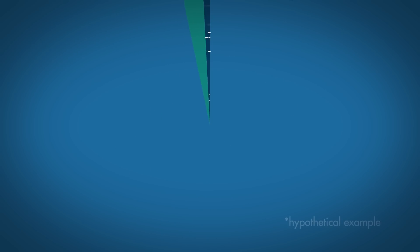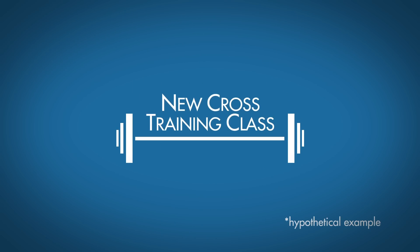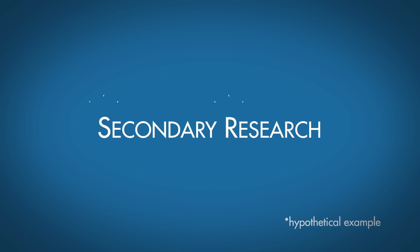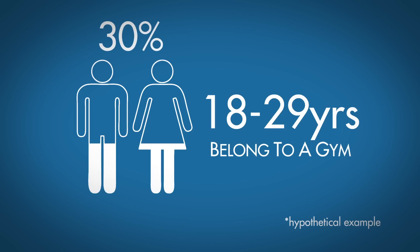For example, you may be trying to survey young fitness fanatics intent to try a new cross-training class, and you may want to survey only those people who have tried such a class elsewhere. Secondary may tell you that only 4% of your city's adults 18 to 29 years old have ever tried a cross-training class, whereas 30% of the same age group may say they belong to a gym or fitness club. If you're estimating how time consuming and costly it'll be to access the cross-training audience versus the traditional gym member audience, you're now better armed.